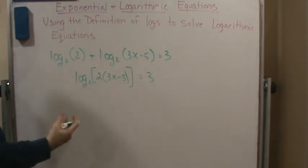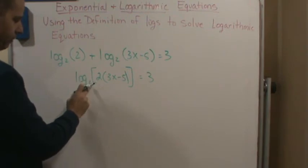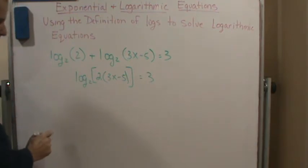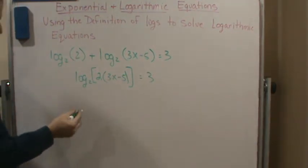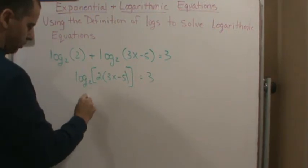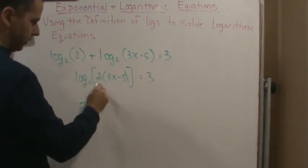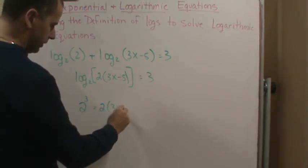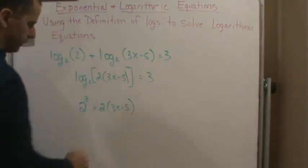So what's the definition of log? It's that, hey, if I raise 2 to the power of 3, it has to equal this. So let's do that. So I know that 2 raised to the power of 3 must equal the argument here, which is 2 times 3x minus 5.